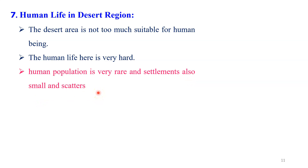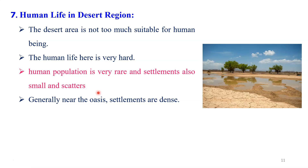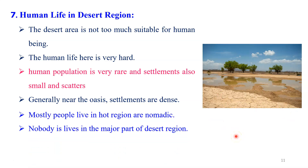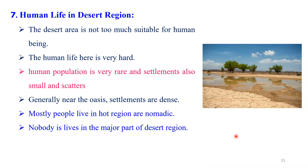If you see the settlements located in the Sahara Desert, you will observe that the population density is very less. Even you have to walk about 80 kilometers to visit a single person. It means very less population density we observe in this area. Generally, near the oasis we have some very small settlements. These are part of the oasis that we observe in the desert area. Mostly, the population living in the hot desert are nomadic. They continuously move from one place to another place to fulfill their needs, wherever water is available.